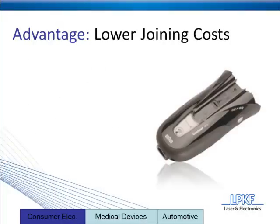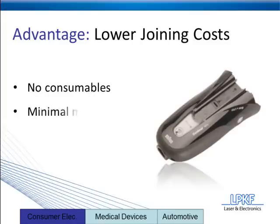Laser plastic welding has the ability to lower joining costs compared to other plastic methods for a few factors. First and most notably, there are no consumables involved — no screws, rivets, adhesives, or tapes. When dealing with mass production, any time you can remove consumables from the equation, you're talking about dropping per-part costs dramatically. The second factor is minimal system maintenance. Laser plastic welding systems are very robust, designed to run 24/7 with very minimal downtime — the only scheduled maintenance is the swap of a water filter on the cooling system for the laser.